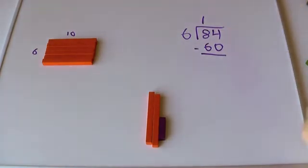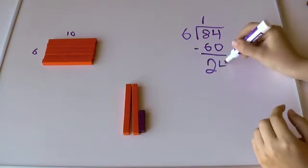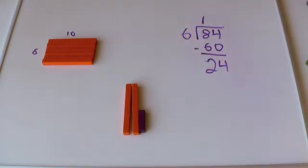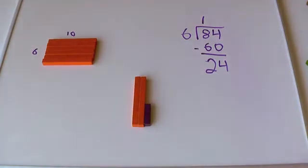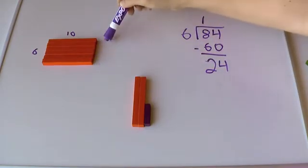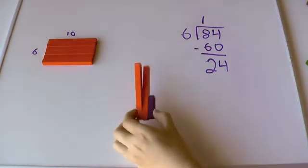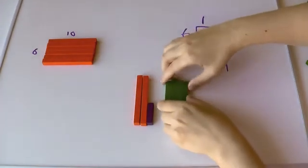I took away 60 from my original 84 here. So, 84 minus 60 is 24. Okay, so I have 24 left, and I still would like to make this into a rectangle with 6 on one side and something on the other. So, 6 times what is 24?